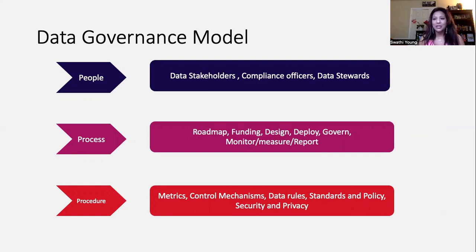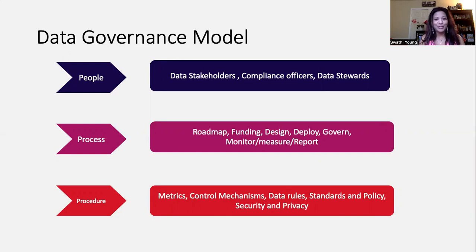What are some of the processes? Establishing the roadmap of what the data looks like for various business units — what sort of budget do you have for it, what is the design of your data, what does your data model look like, how do you deploy any database changes, how do you govern them, how do you monitor, measure, and report the data? What do you mean by procedures? The procedures could include the metrics of the data — how often is the data modified, what is the frequency of updates, and how often are there errors reported in the data?